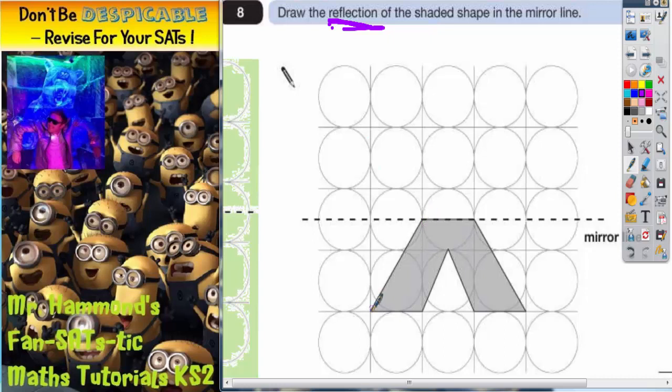Or you could do it by counting how many spaces from each corner to the mirror line. So for example, this corner here is one and a half squares to the mirror line, so it's going to be one and a half squares on the other side. So there's the half and there's the one. So that corner's got to go there.